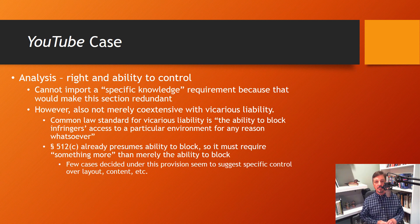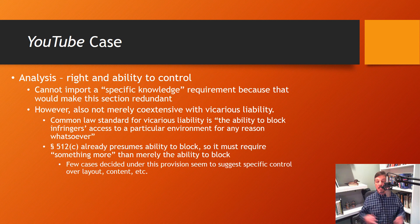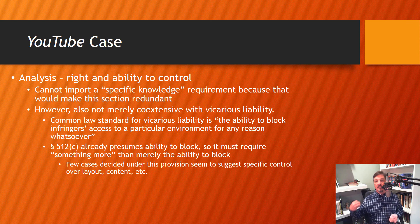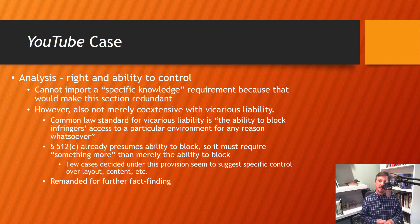A similar issue arises in the right and ability to control provision. Does it mean that you have specific knowledge of already-existing infringing content that you could remove — which would make this section redundant to the actual/red flag knowledge provision? Or does it mean the same thing as a common law vicarious liability claim, which would be really broad and put a wide duty on the content provider to adopt screening and control technologies? Again, the statute isn't quite caught up with how things operate, and the question is who's going to bear the cost of developing screening technology. The case goes back for fact-finding.